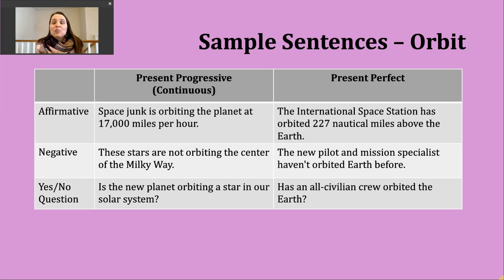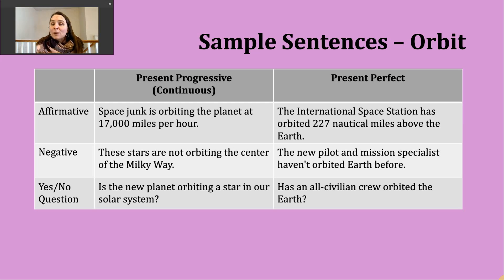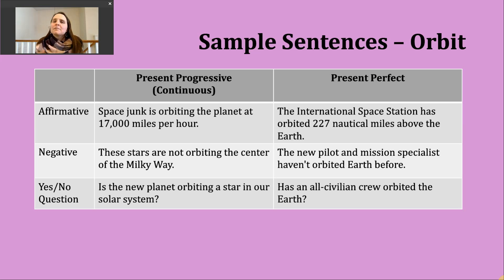Now let's look at the present perfect. We use this tense to describe something that occurred in the past at an unknown point in time — sometimes called the indefinite past — or an action that started in the past and continues into the present. To make the affirmative present perfect, I need two parts: a present form of have — use have for subjects I, you, we, or they; use has for he, she, or it — then the participle form of the verb. Since orbit is regular, the participle and past tense forms look the same.